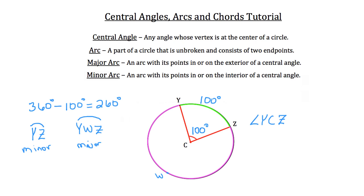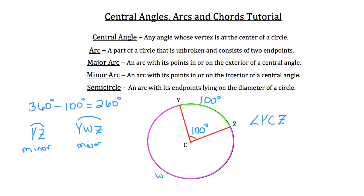So one last important topic to cover about arcs is the semicircle. A semicircle is an arc with its endpoints lying on the diameter of a circle. So if I were to draw in a diameter for this circle — in this case diameter X, Z — the semicircle here would be highlighted down here on the bottom in blue.